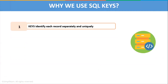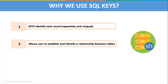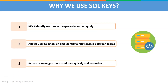Let us now understand why we use SQL keys. SQL keys identify each record separately and uniquely. A key is used in the definition of various kinds of integrity constraints, and a table in a database represents a collection of records or events for a particular relation. Since there are thousands of such records, some of which may be duplicated, in order to identify these records uniquely and separately we need SQL keys. SQL keys also allow users to establish and identify relationships between tables, and they access or manage the stored data quickly and smoothly.